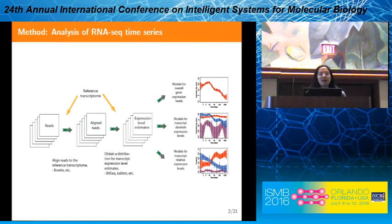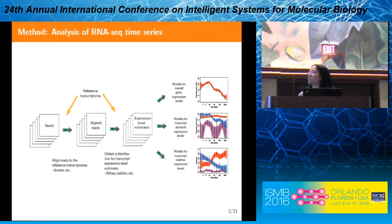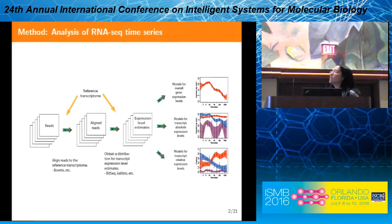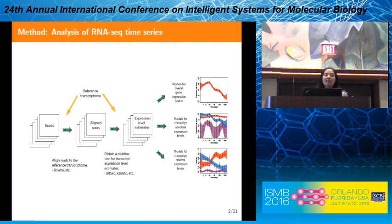This is an outline of my method. First we start with raw RNA-seq reads obtained at different time points, and then we align these reads using a reference transcriptome. Here we used Bowtie, but other methods can also be used. After aligning the reads to the reference transcriptome, we used BitSeq to estimate expression level estimates for transcripts. We don't have only point estimates but also a distribution for them — BitSeq creates MCMC samples from which we can estimate the uncertainty about transcript expression levels. We can also do the same using Kallisto, but in this study we used BitSeq.